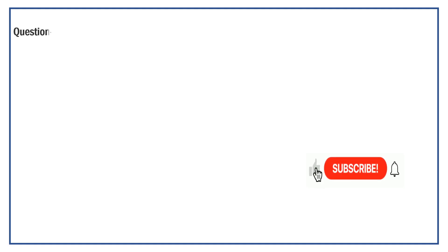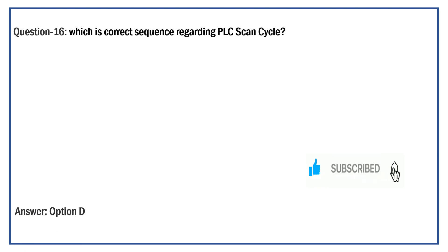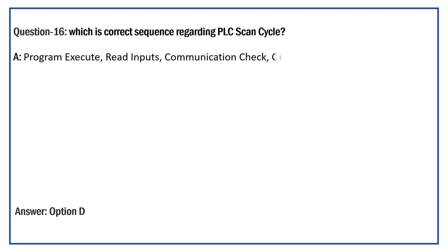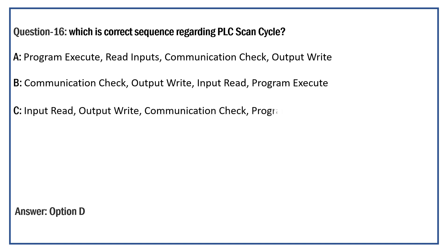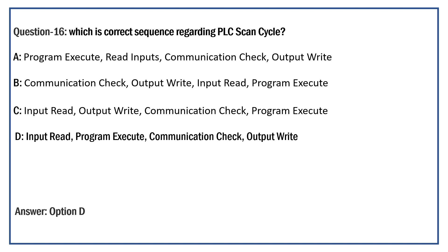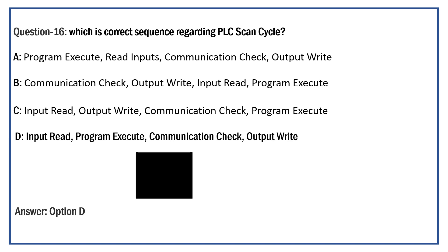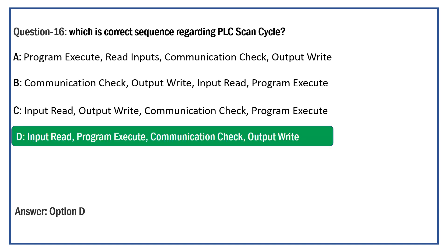Which is the correct sequence regarding the PLC scan cycle? Option A: Program Execute, Read Inputs, Communication Check, Output Write. Option B: Communication Check, Output Write, Input Read, Program Execute. Option C: Input Read, Output Write, Communication Check, Program Execute. Option D: Input Read, Program Execute, Communication Check, Output Write. The right answer is Option D.